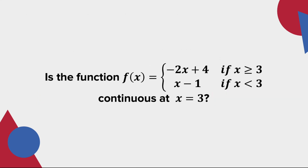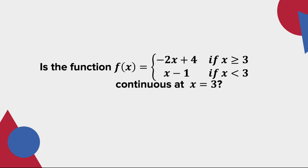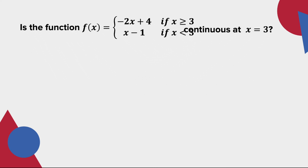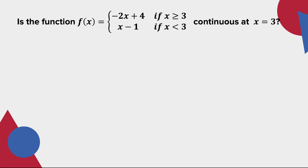For our next example, the function f(x) is equal to negative 2x plus 4 if x is greater than or equal to 3, and x minus 1 if x is less than 3. Is it continuous at x is equal to 3? Evaluating the function at x is equal to 3, we have f(3) which is equal to negative 2.